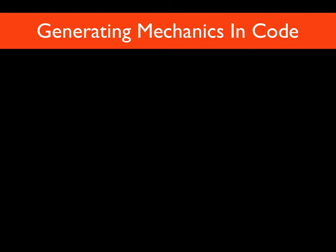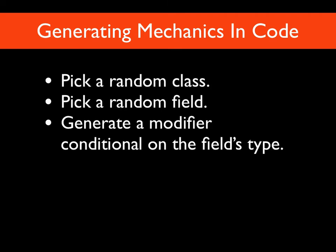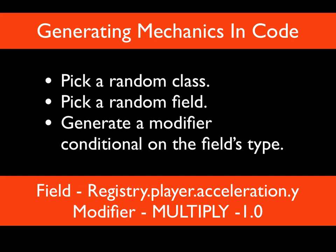So: mechanics are code, we know how to generate code, why don't we just generate mechanics? Sounds fairly easy - in reality, it was a nightmare. But here are the basic steps we took with MechanicMiner: pick a random class within the game code you've been given, pick a random variable within that class, then generate some kind of modifier conditional on the field's type. For example, the field we randomly selected was the player's acceleration vector y-component, and the modifier applied was multiply by minus one.